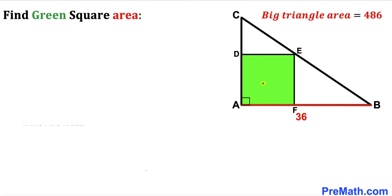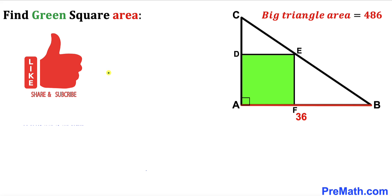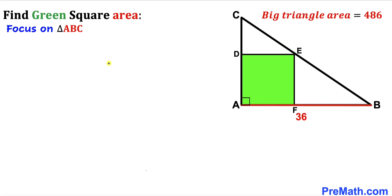In this video we have a green shaded square ADEF fully inscribed in a right triangle ABC, as you can see in this diagram. The area of the big triangle ABC is 486 square units and the side length AB is 36 units. Our task is to calculate the area of this green shaded square. Please keep in mind that this figure may not be 100% true to scale. Let's get started.